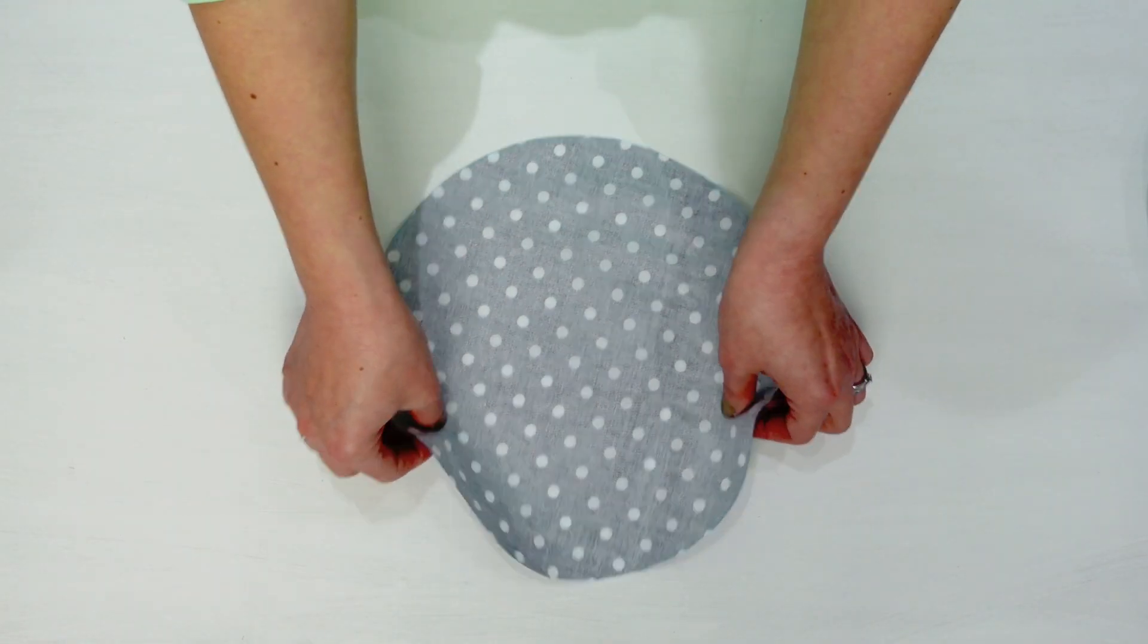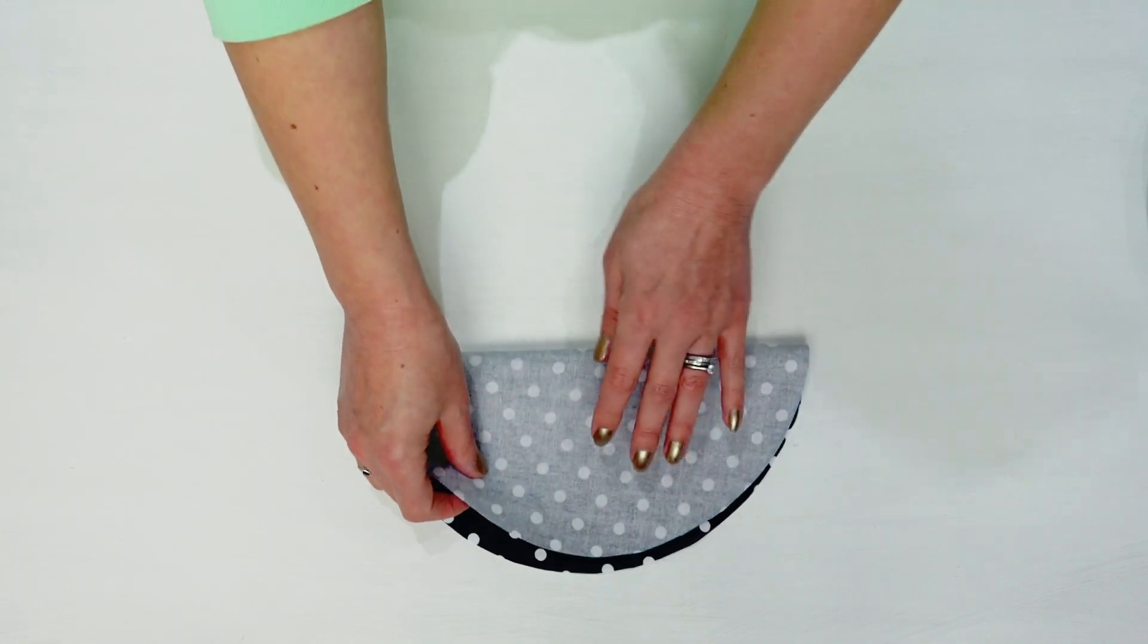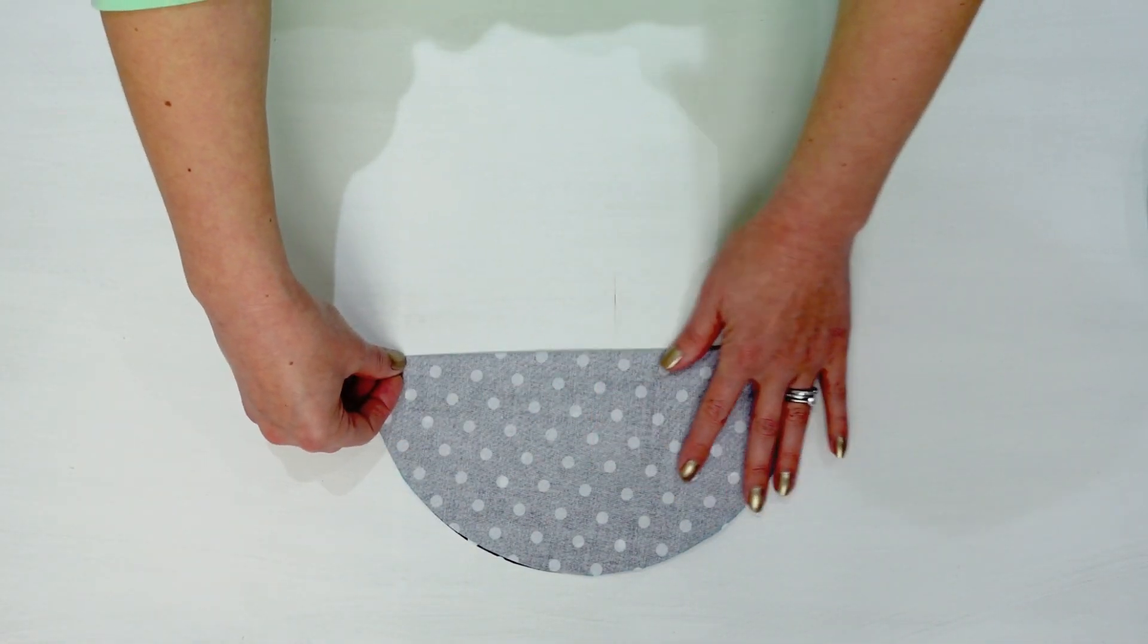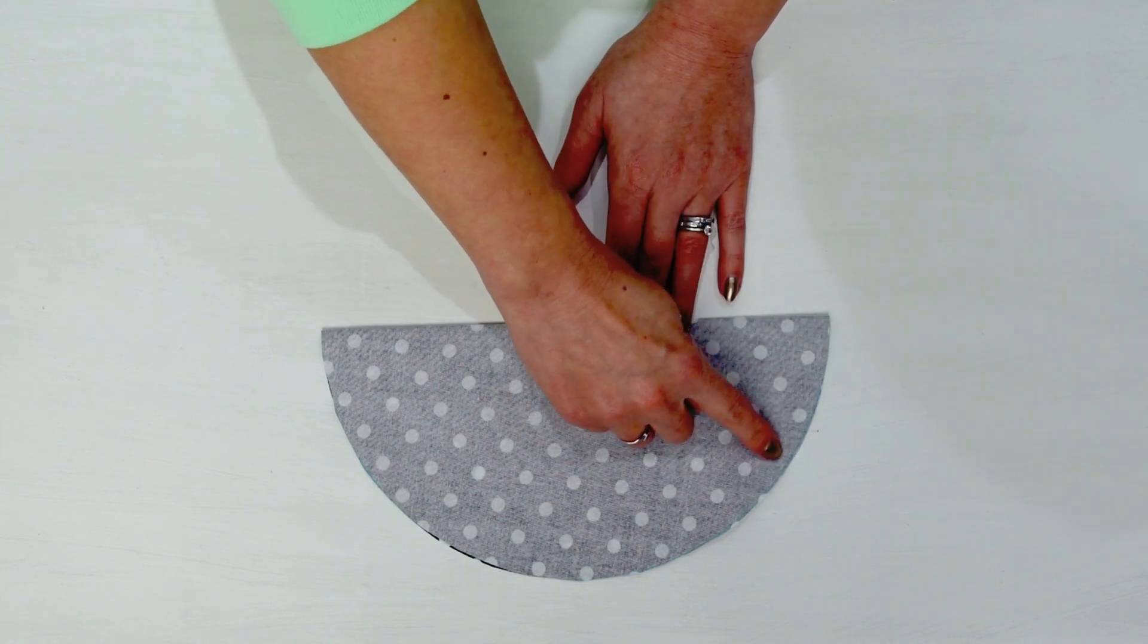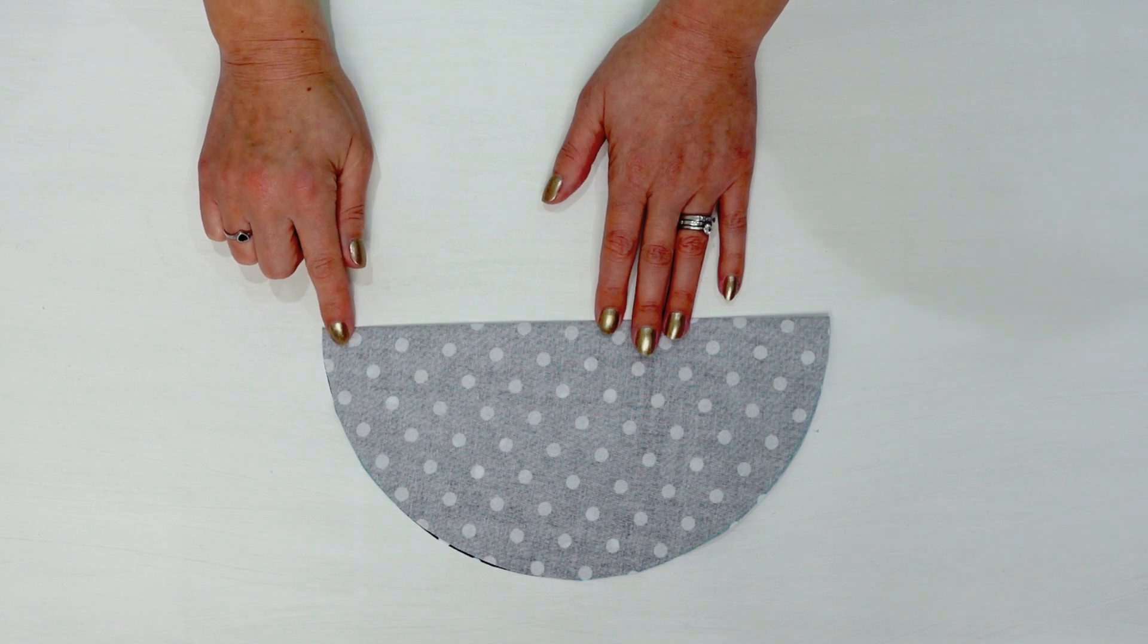Once your circle is cut, turn it right sides up and then fold it in half. You now need to sew around this curved edge. You can do that by hand or on the sewing machine.